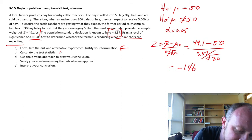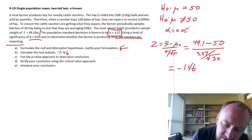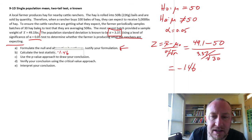Okay. So there's our test statistic. Negative 1.46. Use the p-value approach to draw a conclusion. Okay. So I need to go to my z-tables.